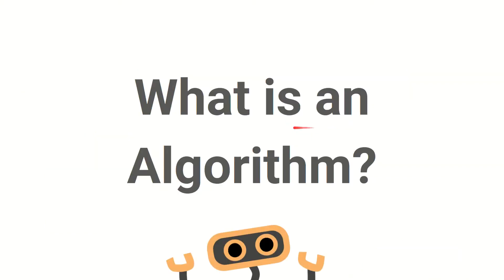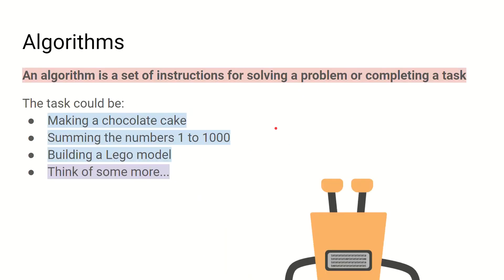What is an algorithm? An algorithm is the first strand of computational thinking. In its simplest way to describe it, it is a set of instructions for solving a problem or completing a task. You can have algorithms for almost anything — it does not have to be computer science related. You can have algorithms for making a chocolate cake, adding some numbers together, or even building a Lego model.